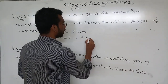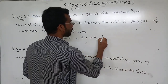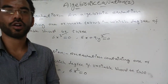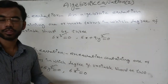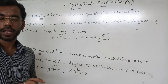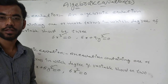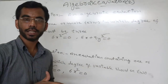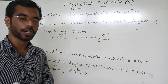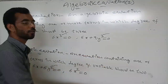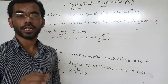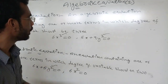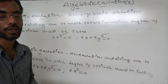For example, 6x³ = 0 is a cubic equation. Also, 6x + 9y³ = 0 — what is the degree here? Three. So it is called a cubic equation. A cubic equation is an algebraic equation containing one or more terms in which the degree of the variable should be three.